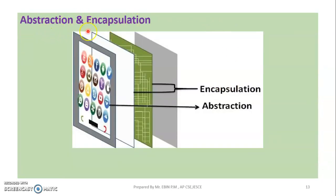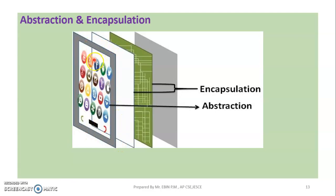We have a connection between abstraction and encapsulation — the terms are related. For example, if you have a mobile phone, you can use it through the screen, applications, and icons. When you use an application, the underlying complexity is hidden. This is the concept of abstraction.